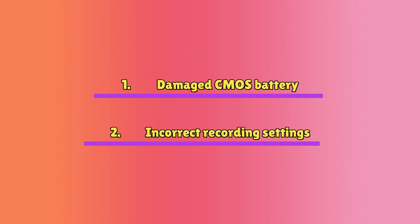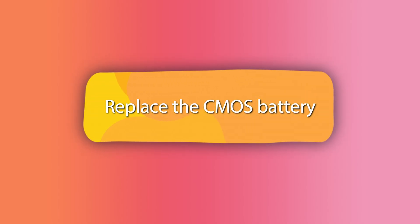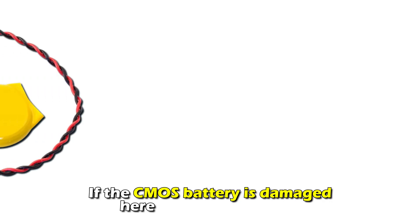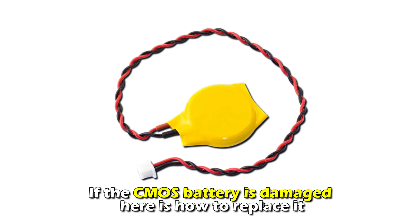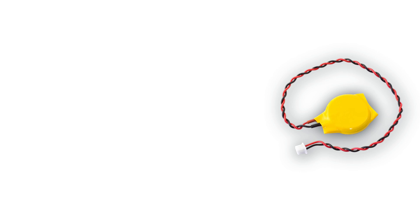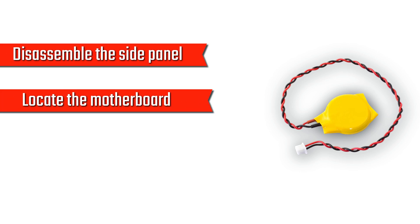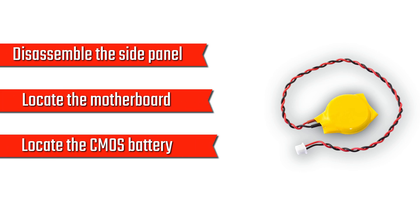Here's how to fix the issues. Fix 1: Replace the CMOS battery. If the CMOS battery is damaged, here's how to replace it. Turn off the power supply, disassemble the side panel, locate the motherboard, and locate the CMOS battery.